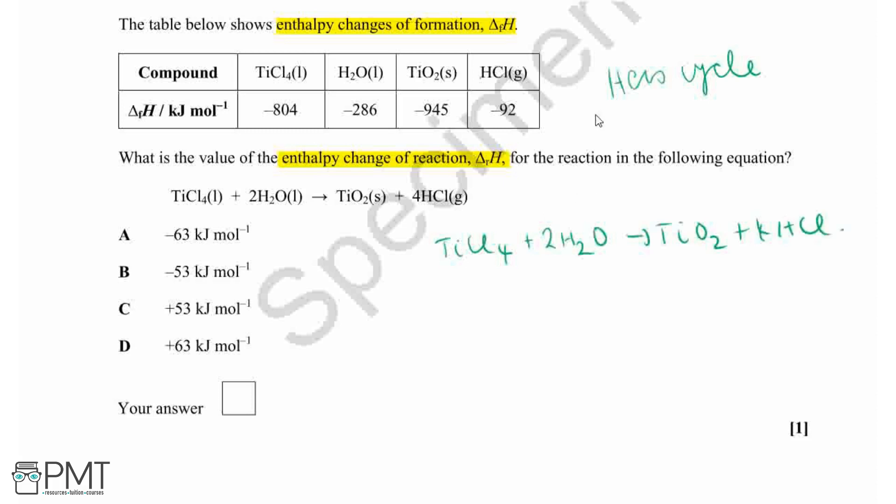Because we're using enthalpy change of formation values, that means we're forming each of these compounds. So on the bottom here, we need to write out the elements which we're forming them from.